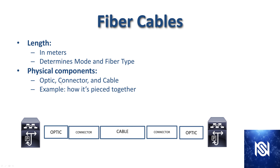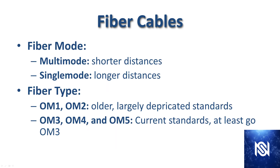The physical components bullet is what we just went through. Now, fiber mode — there are two different modes: multi-mode, which is used for shorter distances, and single-mode, which is used for longer distances. The different fiber types are OM1, OM2, OM3, OM4, and OM5. OM1 and OM2 are largely deprecated standards. If new fiber runs are being put in, you'd want to make sure it's at least going to be OM3.